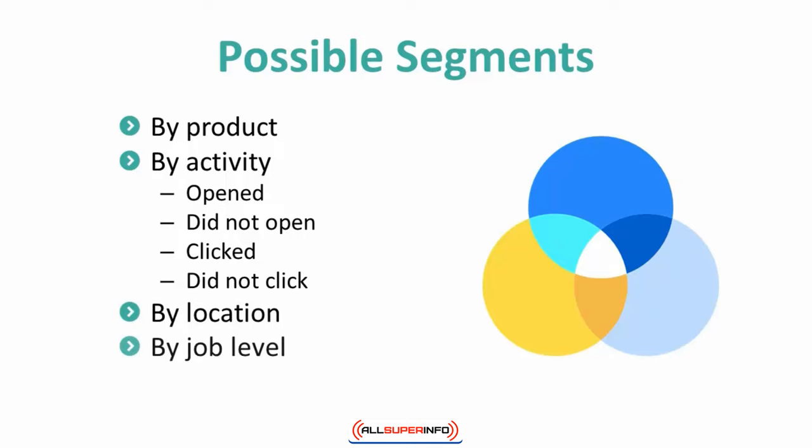Fourth, job seniority level. In certain instances, it may make sense to separate your subscribers according to their occupation. Are you offering informative or educational content? Different levels of seniority will require different levels of content. For instance, if you are providing marketing materials, you may send one set of material to marketing students and beginners, another set to managers or those with intermediate expertise, and advanced material to directors.